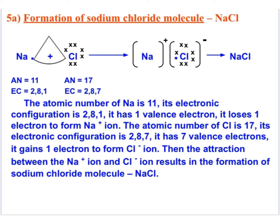Sodium chloride is formed by attraction between Na⁺ and Cl⁻ ions. Compounds formed by transfer of electrons from a metal to a non-metal are known as ionic compounds or electrovalent compounds. Keep in mind that in ionic compounds, the electrons lost by metals are gained by non-metals, and the compound is formed due to attraction between positive and negative ions.